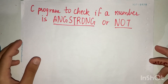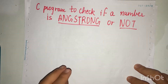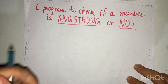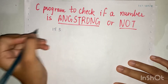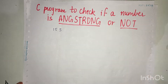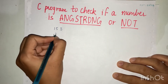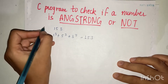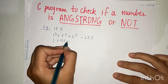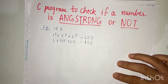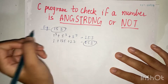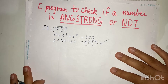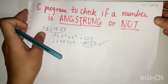Welcome to another video. In this video we are going to write a C program and also draw a flowchart to check if a number is an Armstrong number or not. An Armstrong number is one where the sum of the cubes of the individual digits equals the number itself. For example, 153: 1 cubed plus 5 cubed plus 3 cubed equals 1 + 125 + 27 = 153, which equals the original number. So 153 is an Armstrong number. We will use a while loop to implement this.